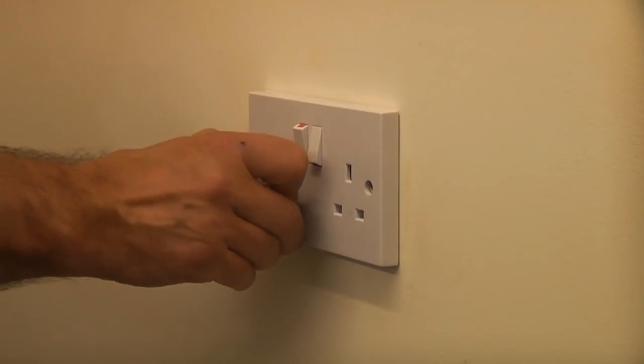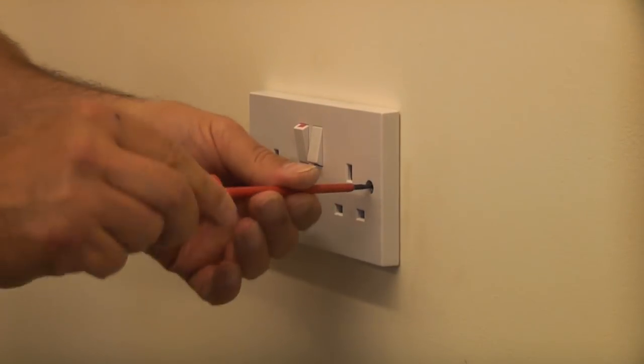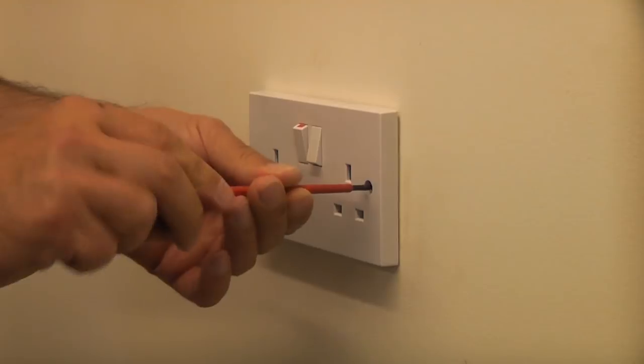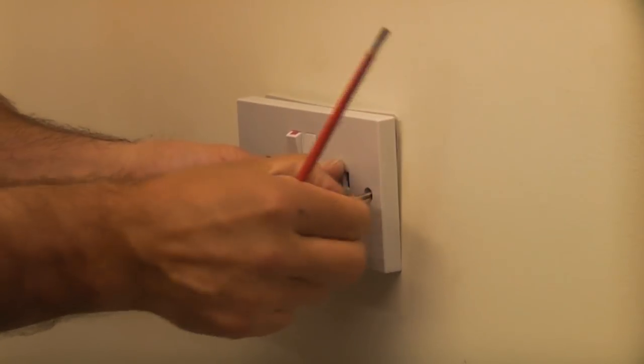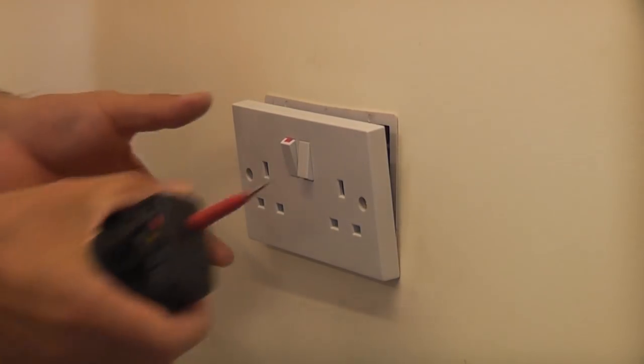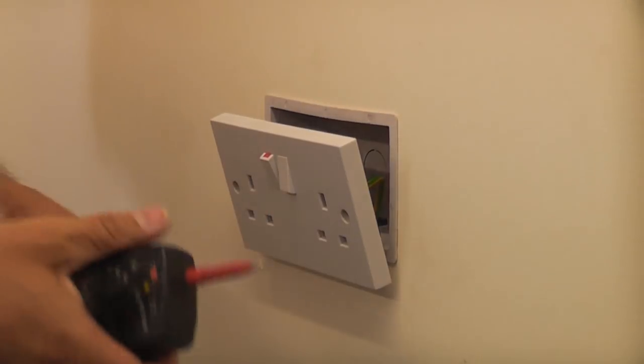So the socket tester has now gone off, so we're going to unplug that. I'm now just going to undo the two retaining screws. Now that I've done that, I'm going to carefully pull the socket forward. I'm not actually going to touch anything behind there just yet.